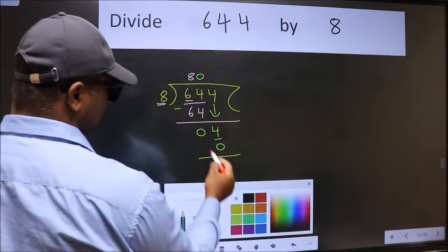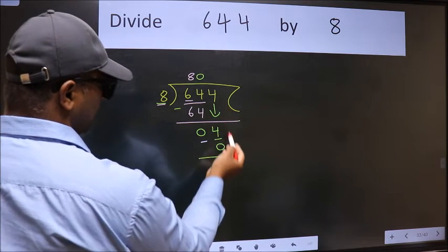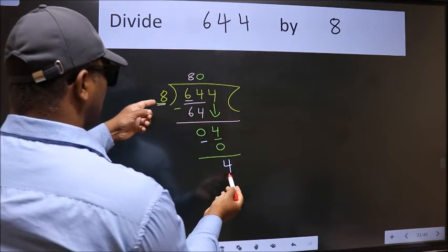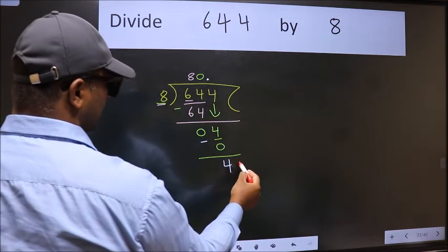Now we subtract. We get 4. Over here, we did not bring any number down, and 4 is smaller than 8. So now we can put dot and take 0.